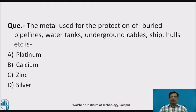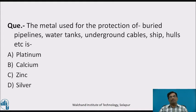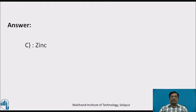Pause the video and answer this question: The metal used for the protection of buried pipelines, water tanks, underground cables, ship hulls, etc. is — A. Platinum, B. Calcium, C. Zinc, D. Silver. Welcome back. The answer to this question is Zinc.